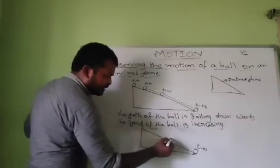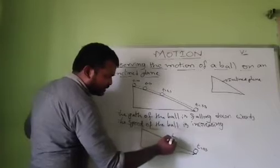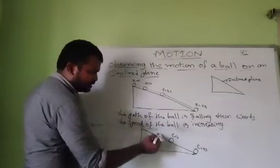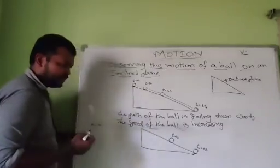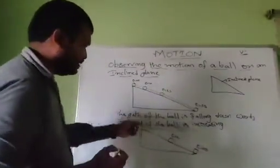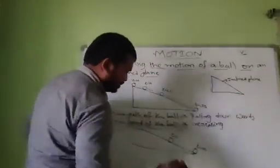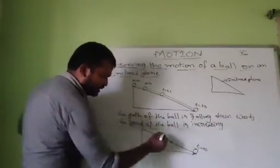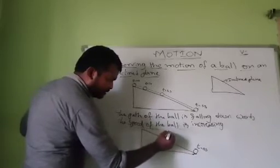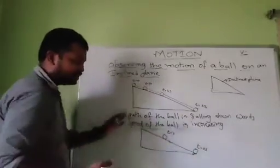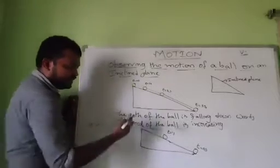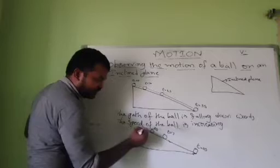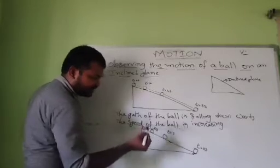For t equal to 1 second, it travels a certain position. For t equal to 2 seconds, it travels a certain position, maybe greater than this. At t equal to 1 second, it has traveled up to here. Because you applied some force, it reaches a higher distance. Next, t equal to 2 seconds, it may travel up to here. t equal to 3 seconds from the top.